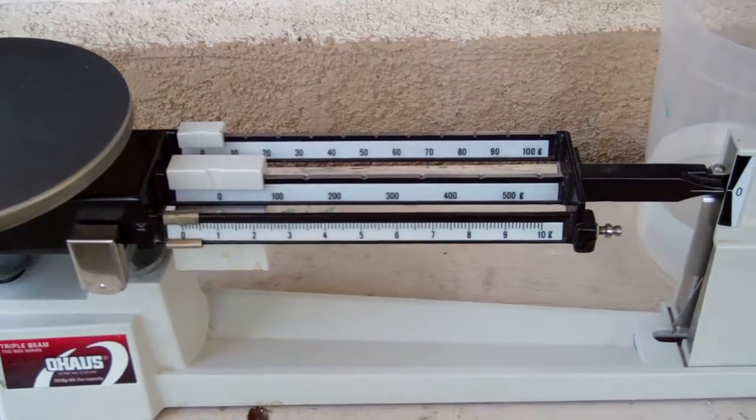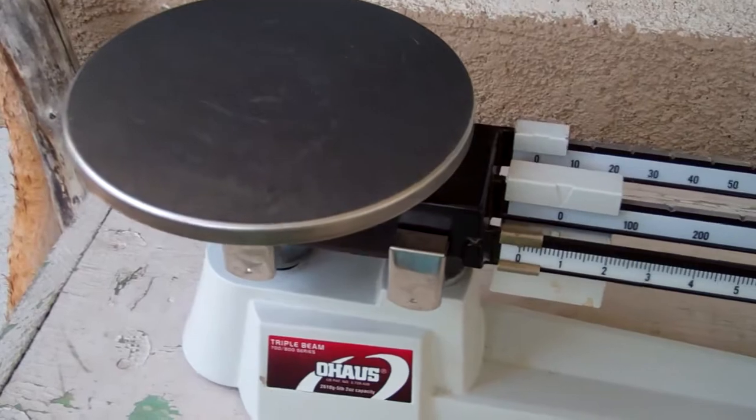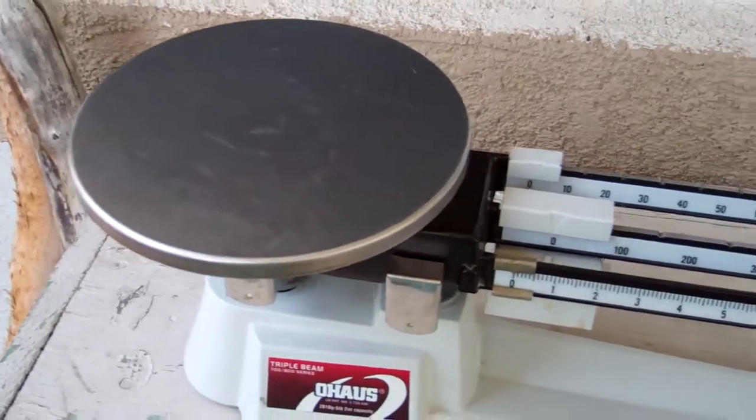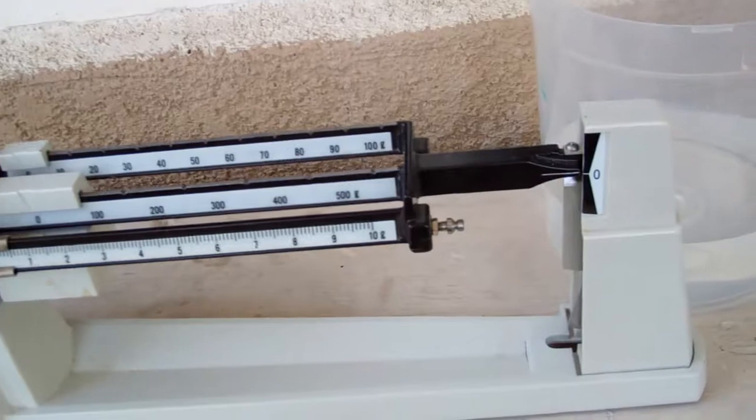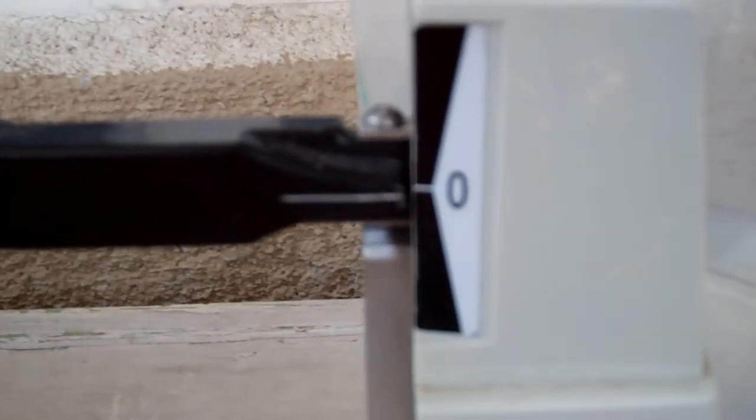And before you use the triple beam balance, you want to make sure that nothing's on the pan. That's the pan. And that the zero line over here on the right is at zero. That's the zero line.